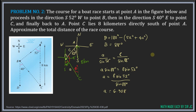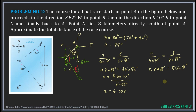Now we find side C, which is opposite the 40-degree angle. Using the Law of Sines: C / sin(40°) = 8 / sin(88°). Cross-multiplying: C · sin(88°) = 8 · sin(40°). Therefore C = 8 · sin(40°) / sin(88°) ≈ 5.145 kilometers.